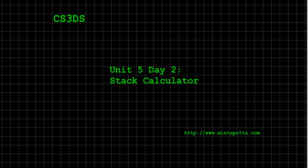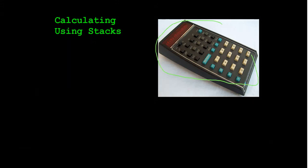I want to bring this up because the first calculators that came out ended up using stacks. This here is the HP35 calculator, which came out in 1972. It was one of the first calculators that used stacks for representing data and operators in its memory, and also used a stack as a way for the user to enter data. We're going to be talking about one stack to keep track of operators and one stack to keep track of numbers, using ints to keep things simple.